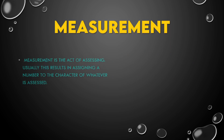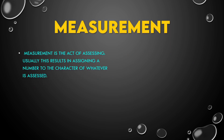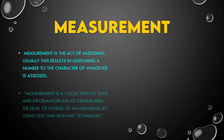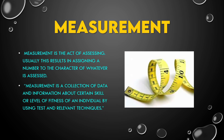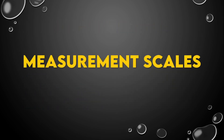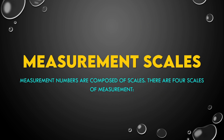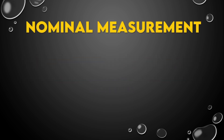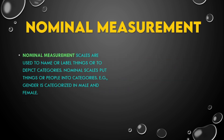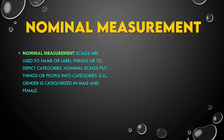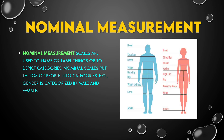Measurement is the act of assessing. Usually this results in assigning a number to the character of whatever is assessed. Measurement is a collection of data and information about a certain skill or level of fitness of an individual by using test and relevant techniques. Measurement numbers are composed of scales, and there are four scales of measurement. Nominal measurement scales are used to name or label things or to depict categories — they put things or people into categories. Example: gender is categorized as male and female.